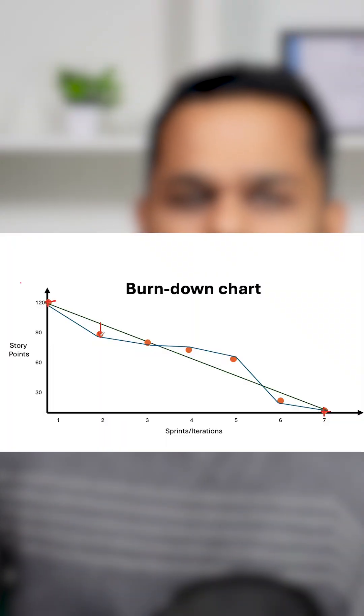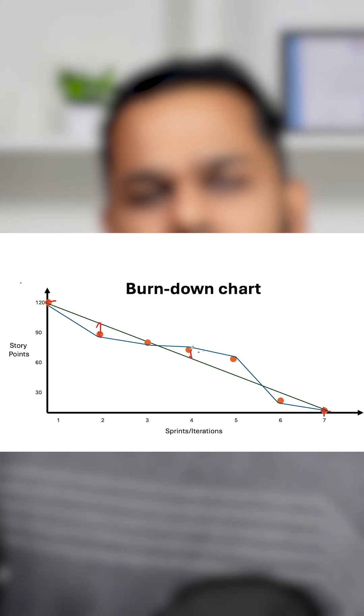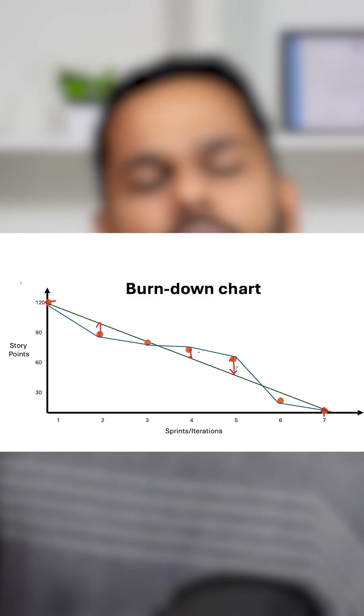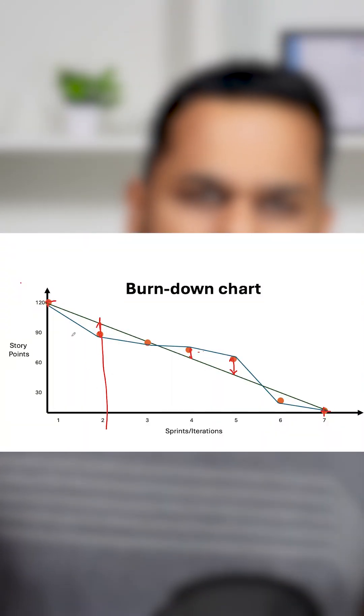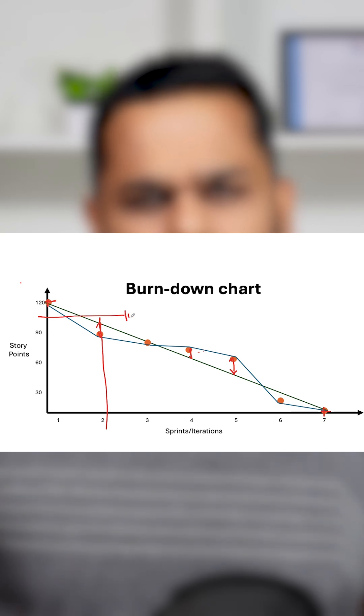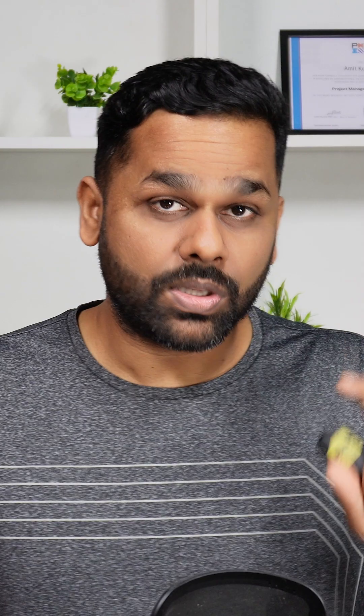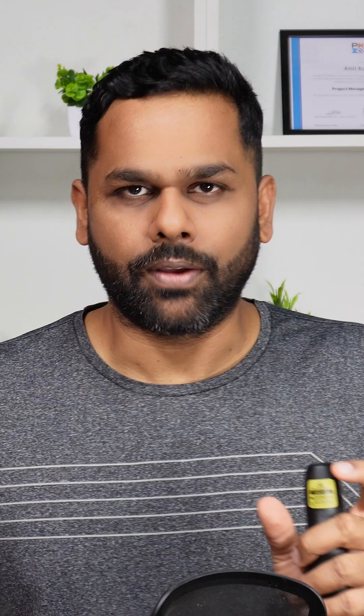When we look at this chart and we see the gap between the plan and the actual, this tells us that there is a variation in what we had planned for and what we are actually achieving. If you look at the second iteration point, there were approximately 100 story points pending — that was our plan. And when the team completed the work, there are 90 story points pending, which means the team is doing a better job. The team is ahead of schedule — they are completing more work than what they had planned for.